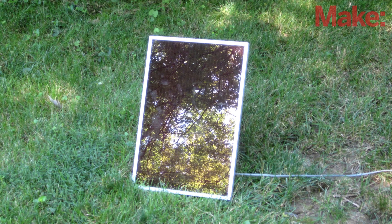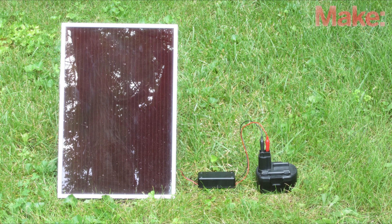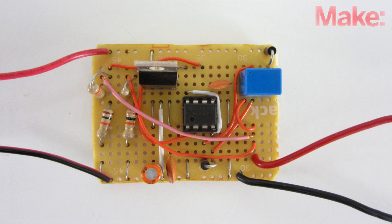Solar power is a great way to get electricity out to a remote project site. One way to do this is to use a solar panel to charge the batteries of your cordless power tools. All you need is a solar panel and a simple charge controller.